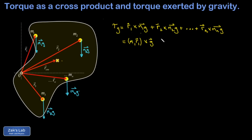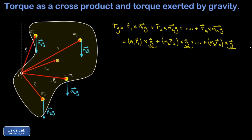As it turns out — and we won't prove this here — the cross product is distributive. Every single one of these terms is crossed into the exact same vector: g pointing straight down. So the sum of those cross products can be rewritten as the sum of all mi·ri vectors, crossed into the vector g pointing straight down.